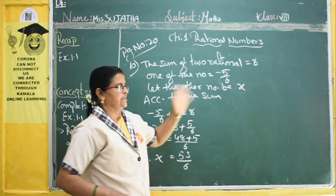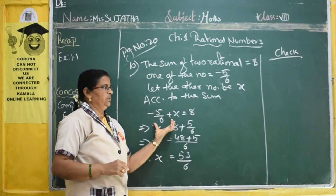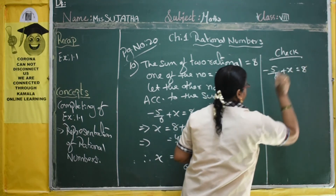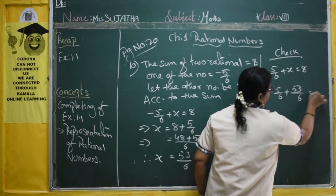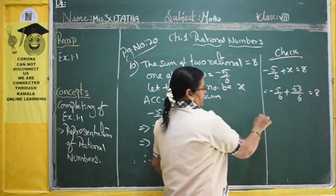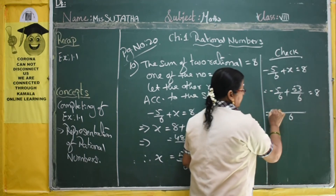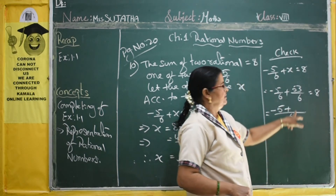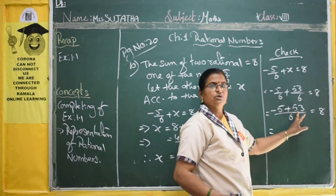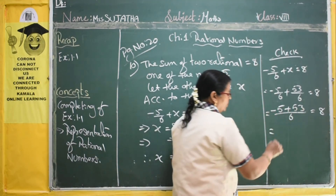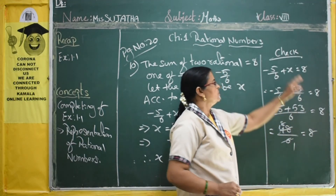Then what do we have to do? We have to check — either we got the correct answer or not. According to the equation: minus 5/6 plus x equals 8. Substitute x = 53/6: minus 5/6 plus 53/6 equals 8. Both denominators are the same, so LCM is 6. 6 divided by 6 is 1, 1 into minus 5 is minus 5, plus 1 into 53 is 53, equals 8. Minus 5 plus 53 gives 48. 48/6 equals 8. Both sides give 8 equals 8. Our answer is right. If this sum has 2 marks, you will get 2 marks.